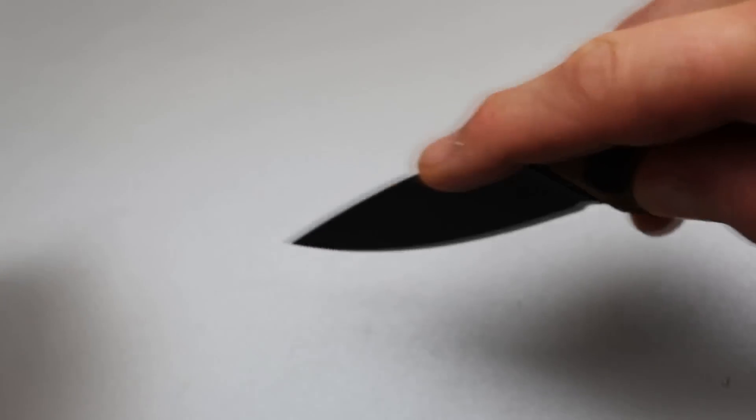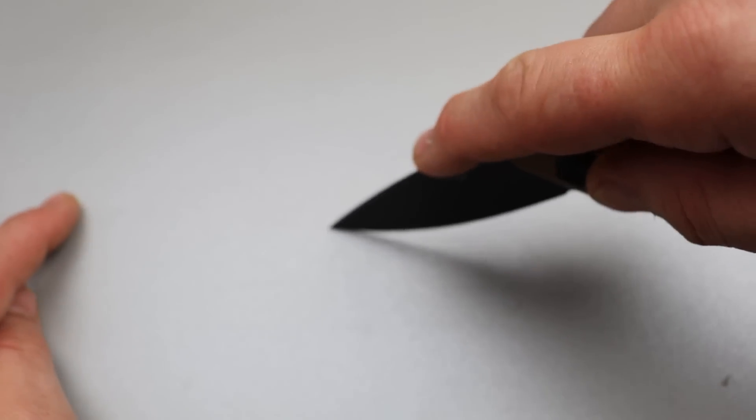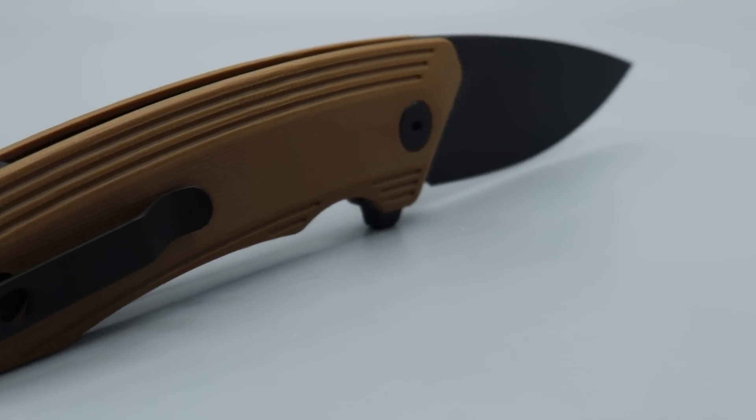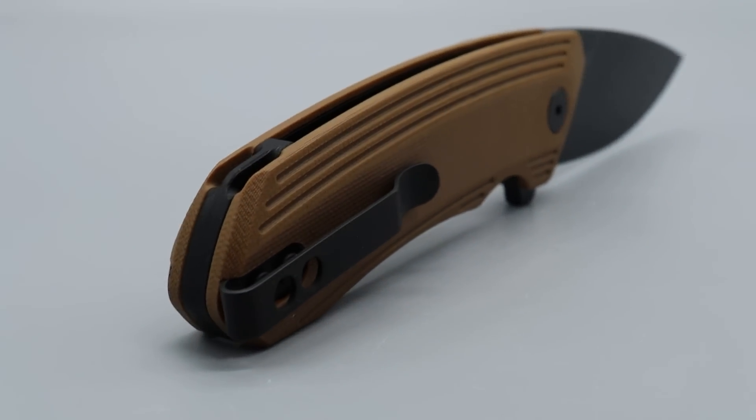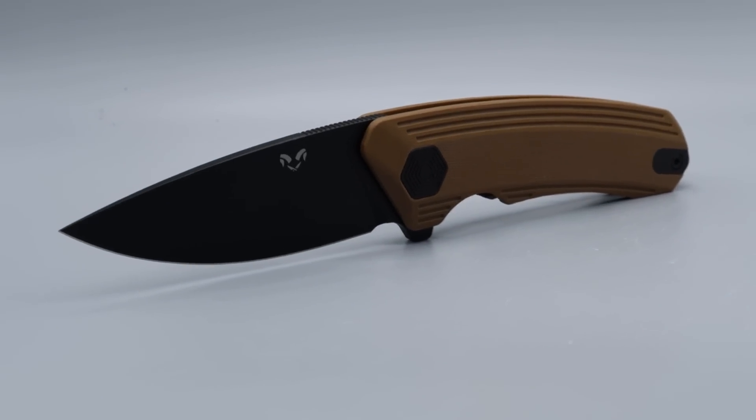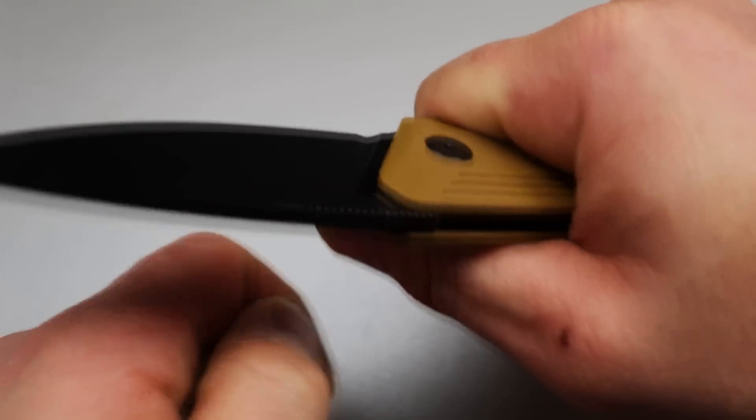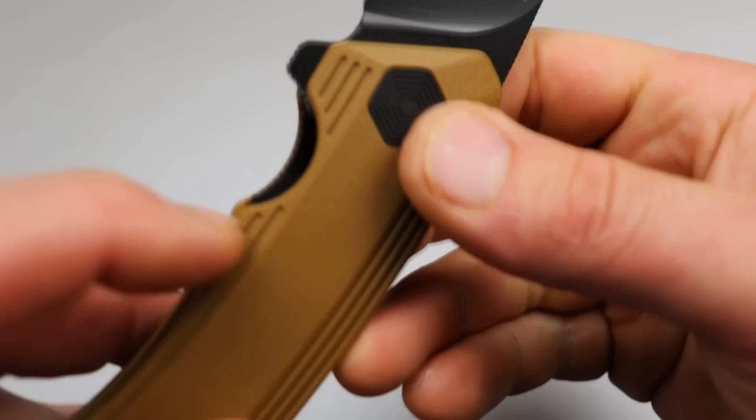This blade shape is really good for work because you can get really good piercing tip cuts, doing utility cuts and stuff, but it has nice and slicey geometry coupled with these ergos. These are hand melting ergos.